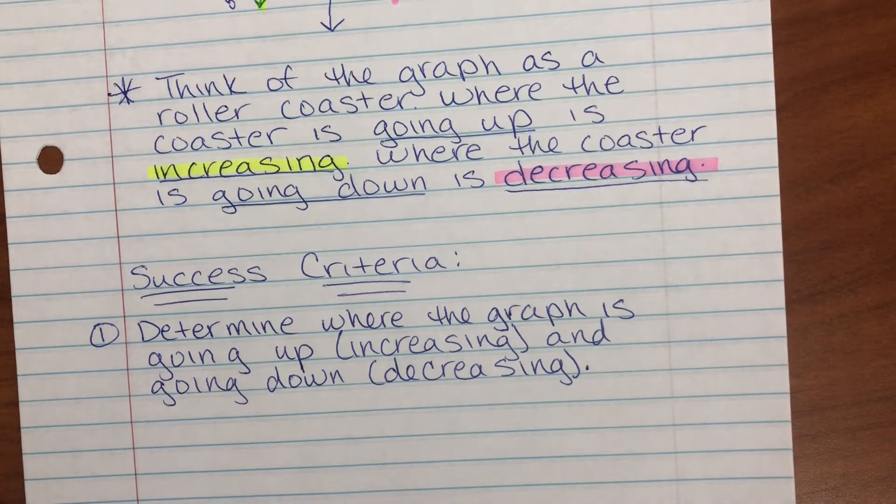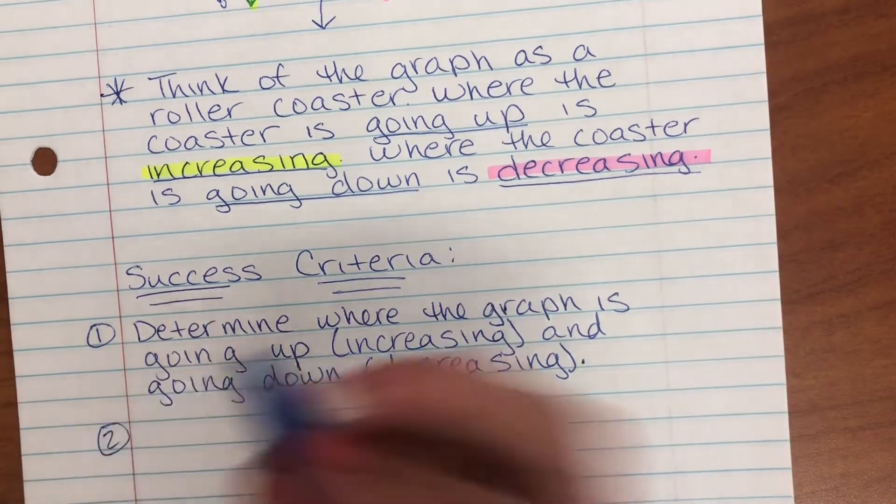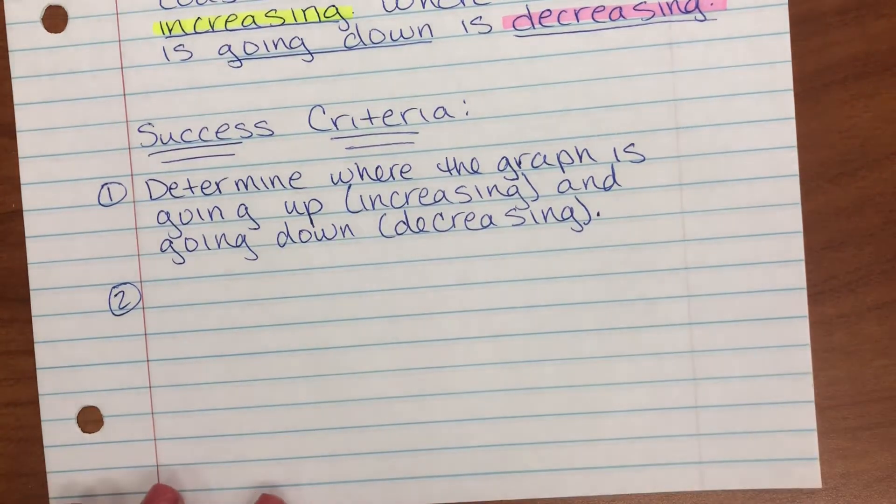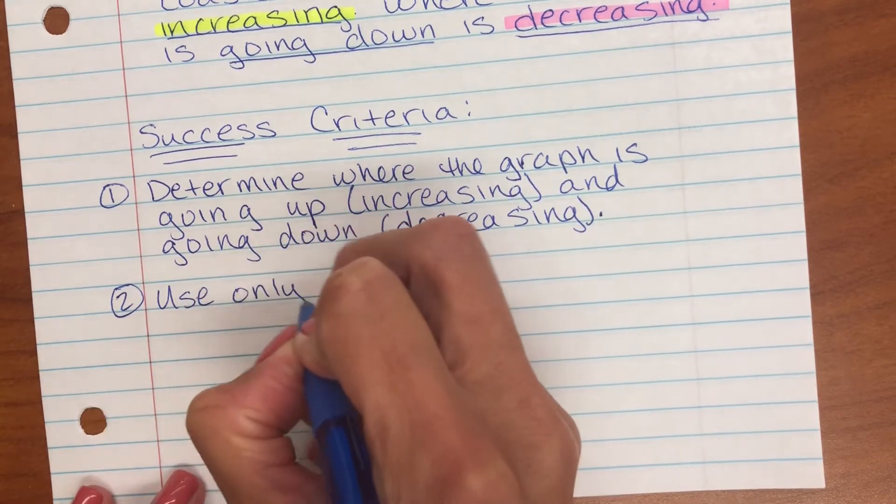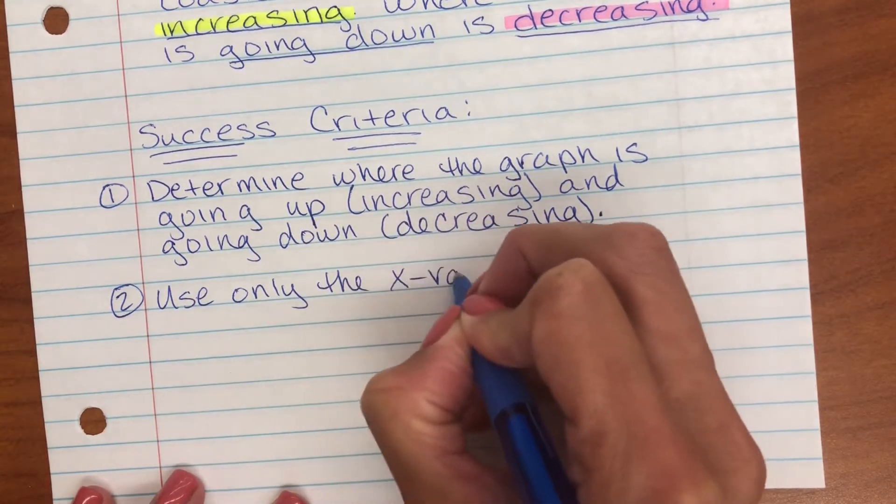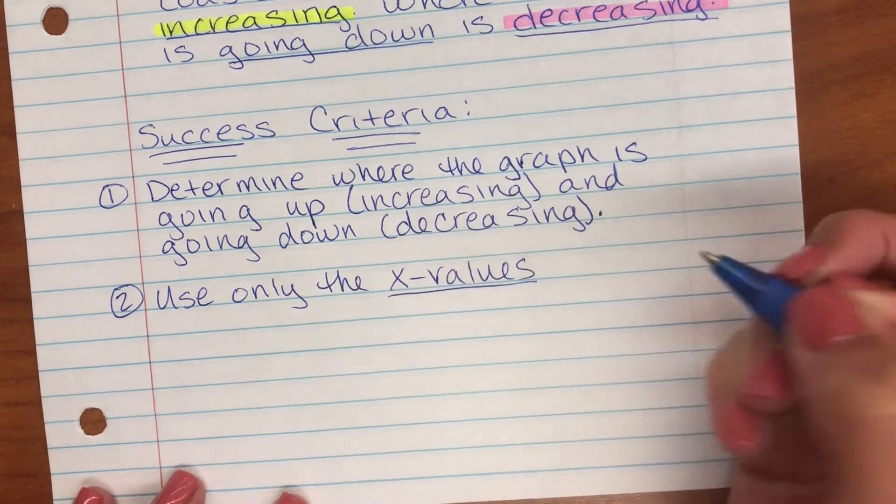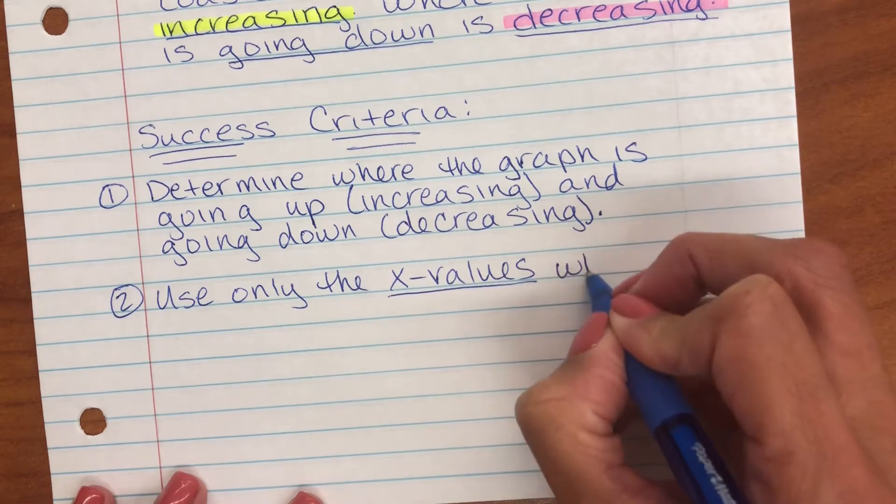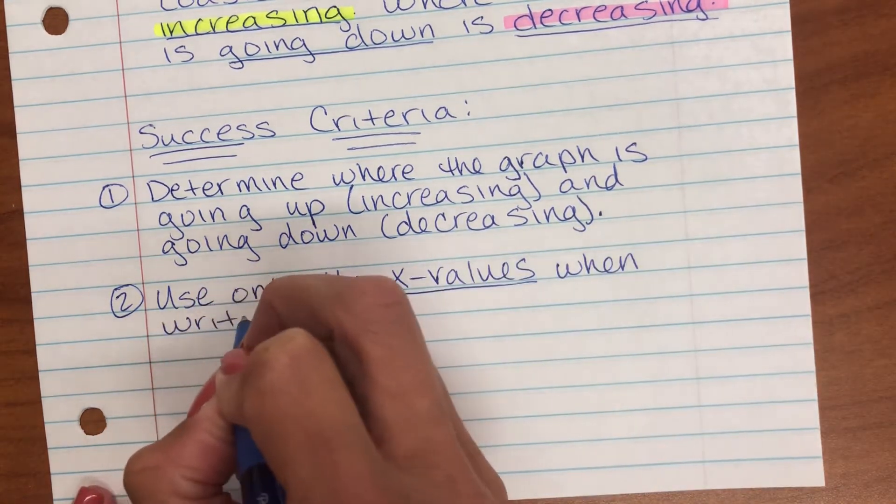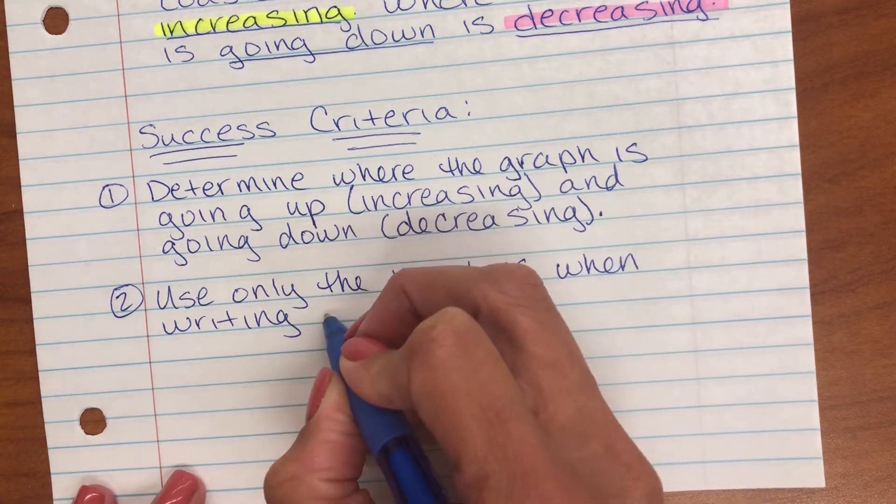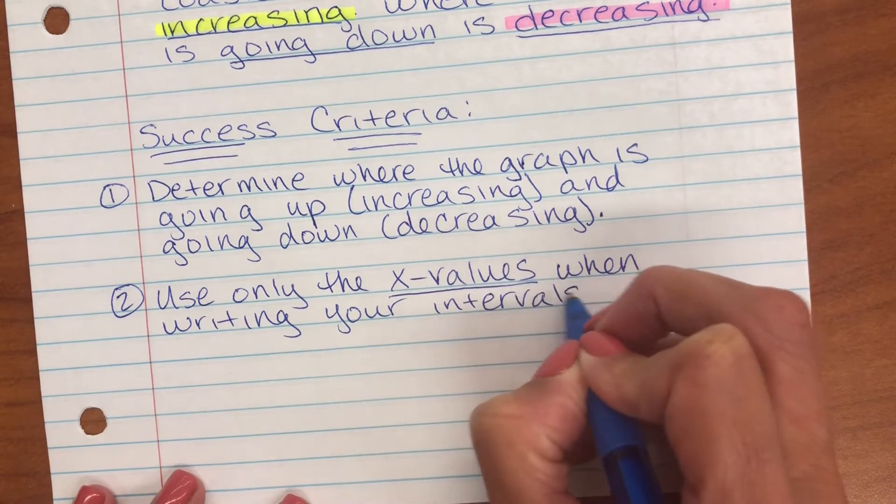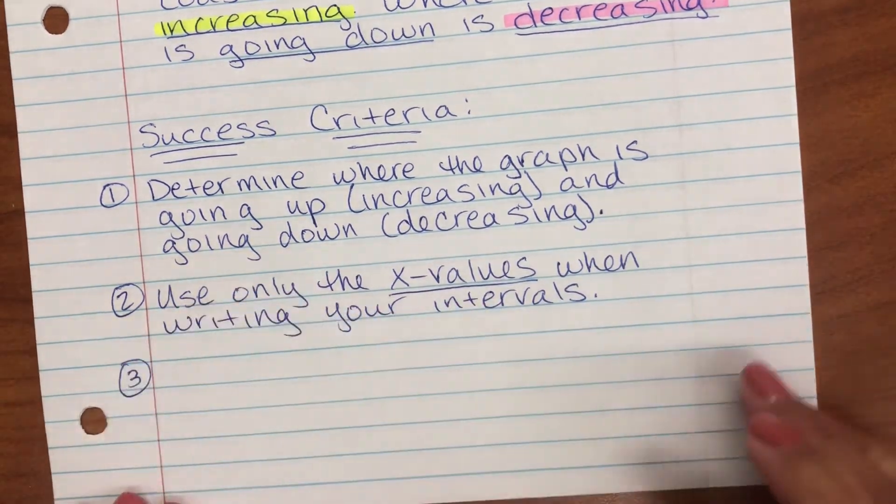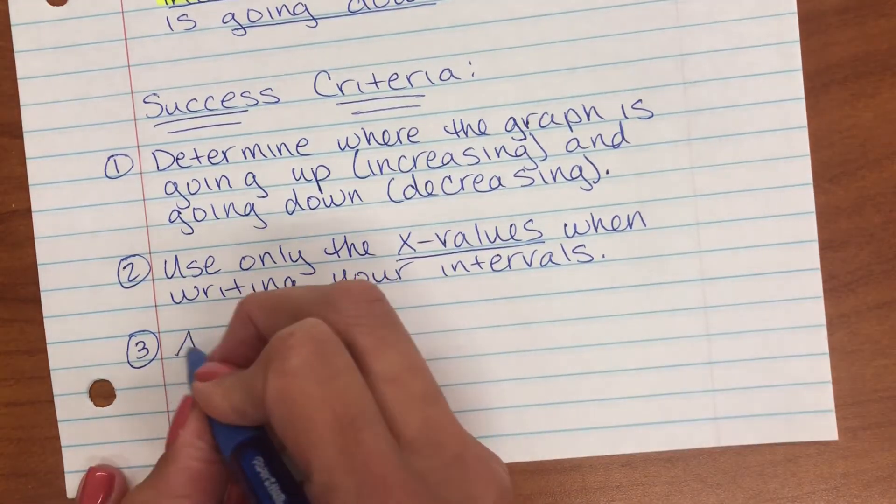Step two is use only the x values when writing your intervals. I'm going to do step three, too, because these go together. And then step three is always use parentheses.